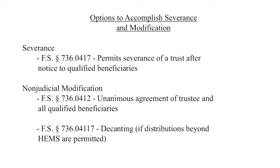Non-judicial modification options include Florida Statute 736.0412, which provides that upon unanimous agreement of the trustee and all qualified beneficiaries, the terms of the trust can be modified. Limitations: it only applies to trusts created after December 31, 2000, and the trust must state it extends for the maximum period allowed under Florida law. In 2001, Florida changed the maximum trust term from 90 years or 21 years after a life in being to a 360-year maximum. As long as your trust has the 360-year provision, you can use 736.0412.